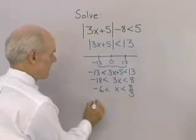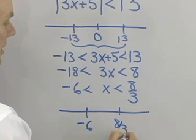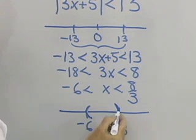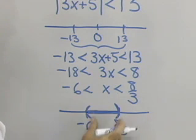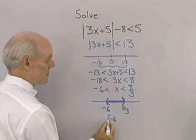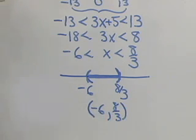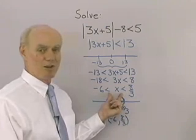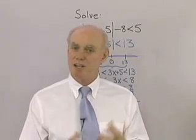For the graph of the solution set, I'll draw a number line with negative 6 and 8 thirds, using open braces at both endpoints since they are not included, and shade the middle region. In interval notation, the solution is the open interval from negative 6 to 8 thirds, not including either endpoint. That's a quick look at how we solve linear inequalities that involve absolute value.